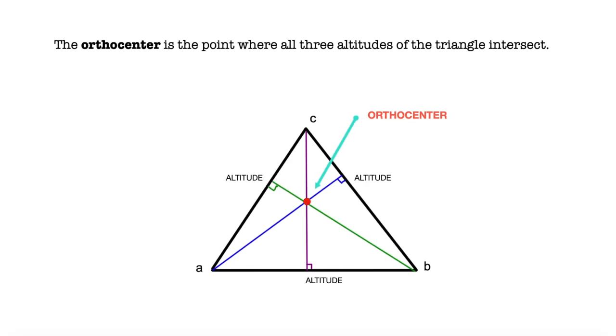Since a triangle has three segments, we can trace three different altitudes from each one. And the point where they all meet, the three altitudes, is going to be the orthocenter of the triangle.